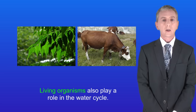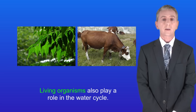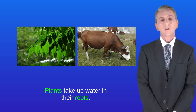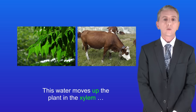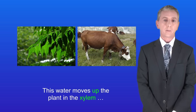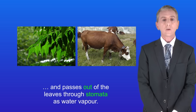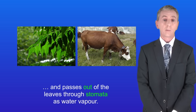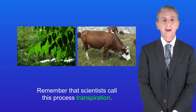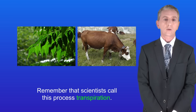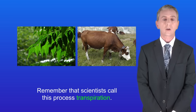Living organisms also play a role in the water cycle. Plants take up water in their roots, and this water moves up the plant in the xylem and passes out of the leaves through stomata as water vapor. Scientists call this process transpiration.